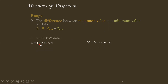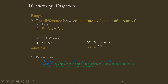For the birth weight data, diet program one has a minimum of 6 and maximum of 8, giving a range of 2. Diet program two has a minimum of 3 and maximum of 11, giving a range of 8. The larger the spread of data, the higher the range; the smaller the spread, the lower the range.